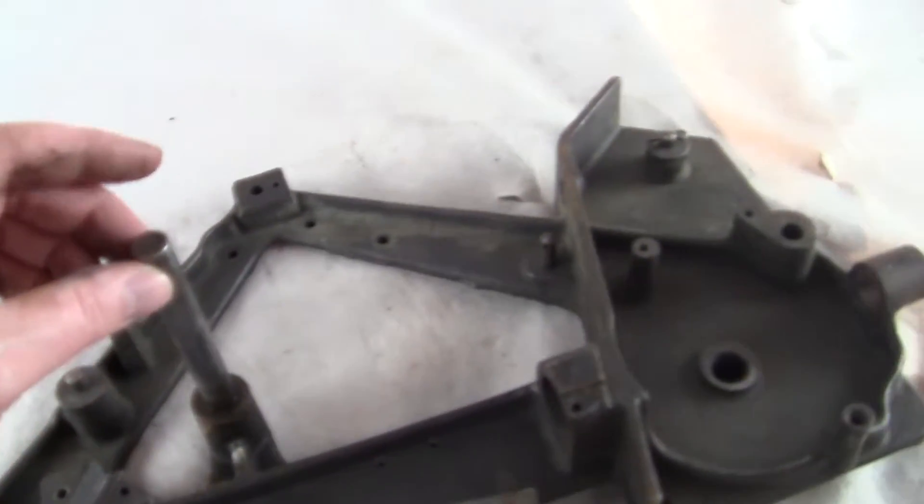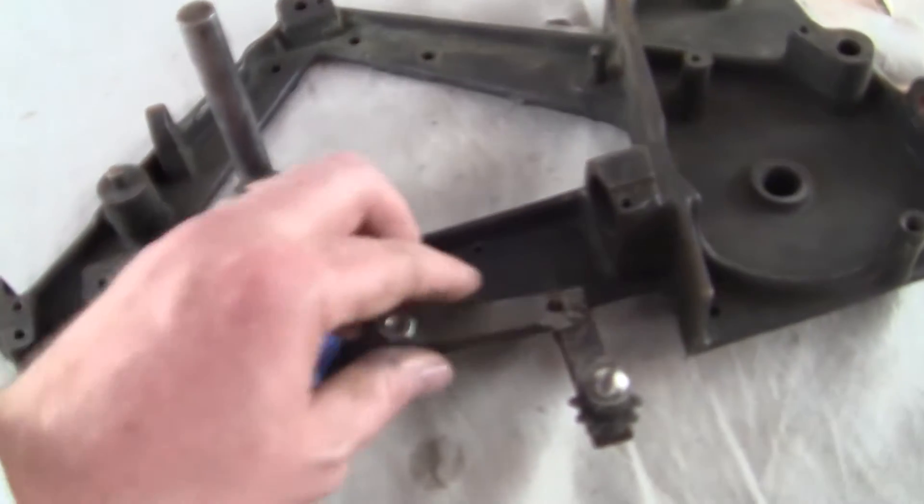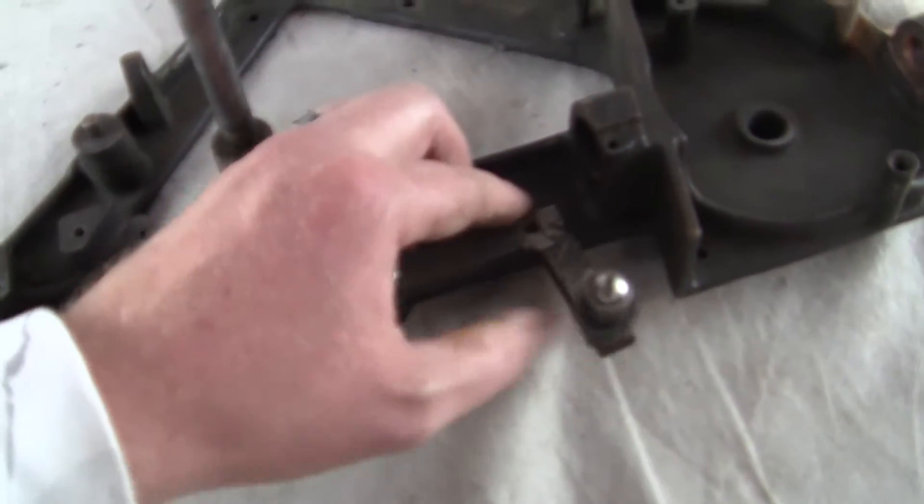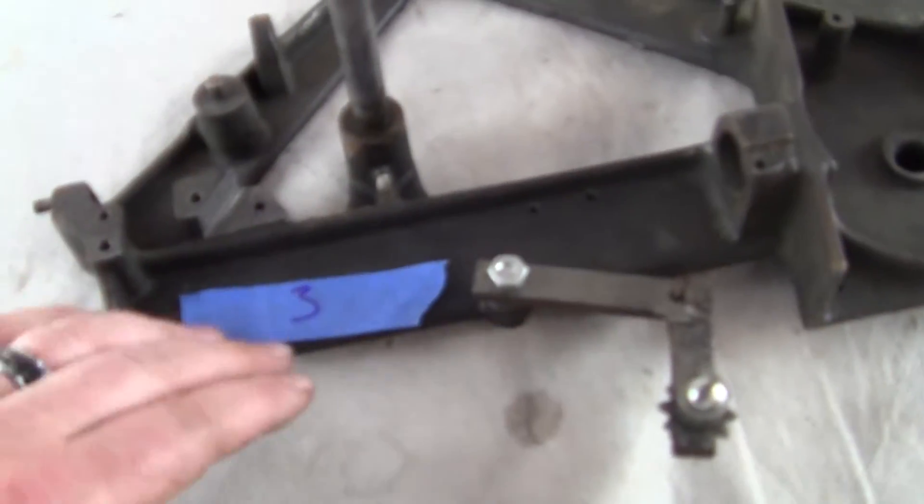This has the rod here, which our first one didn't. It's got this extra bracket here with the sprocket. Not quite sure what that's for. I don't think it's original.